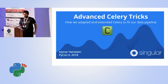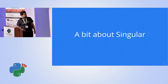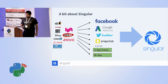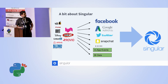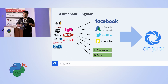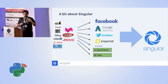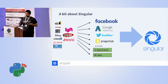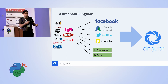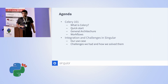I'll start with a short introduction about Singular. Basically what we do at Singular: we are an analytics company, we provide analytics for mobile marketers. Typically what they do is advertise in many different marketing channels, especially Facebook and AdWords, and they also collect data from their internal BI and app events. What we try to do is join all that data and provide smart analytics. We also have a booth outside if you want to hear more.